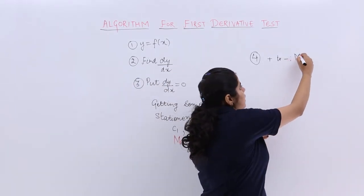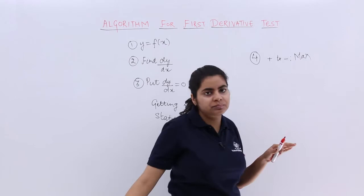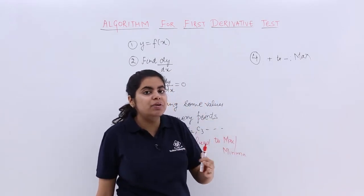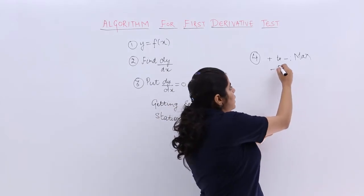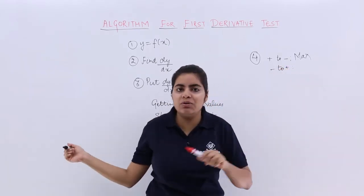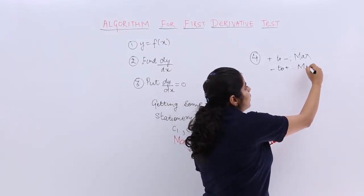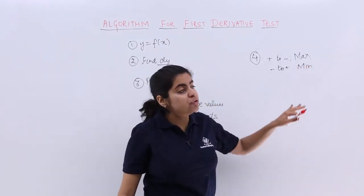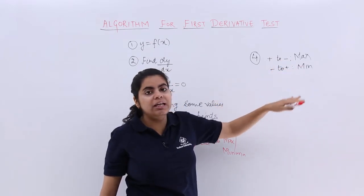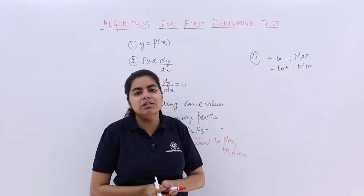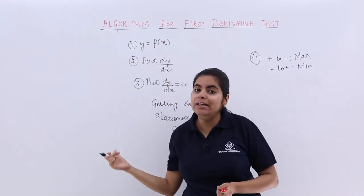If in the second case, my f prime of x changes sign from negative to positive on putting the value, whatever value is there - that c1, c2, c3, these all values - then it leads to minima. But if not positive to negative, not negative to positive, that means there is no change as you move forward in the positive direction of the x-axis while dealing with these critical points or stationary points.